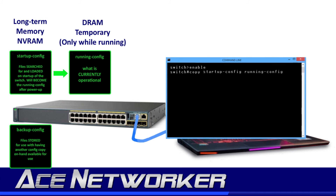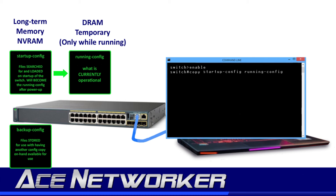The more you work in computer networking and with command line interface access on switches and routers, the more obsessive compulsive you will get at typing 'copy run start' almost every 10 seconds when making configuration changes — especially changes you want permanently made. This is because you always want to make sure the changes you're making are being saved to the startup configuration in case of an unexpected power outage or reboot. Power outages and unexpected reboots will happen. But this is on a case-by-case basis. You may be experimenting with changes to the running configuration — maybe changing VLAN membership — and discover this inadvertently caused disruptions. Since you didn't save those changes to the startup configuration, you can just copy startup-config to running-config to set it back to the correct settings, knowing the correct configuration is still in the startup config because you haven't overwritten it yet.